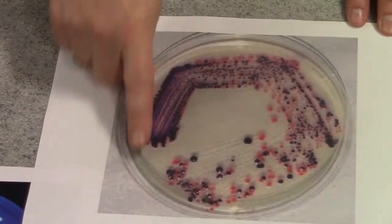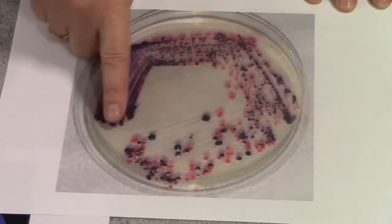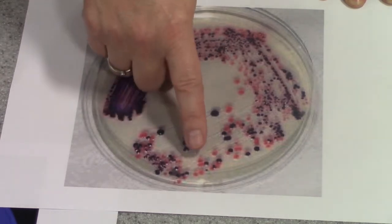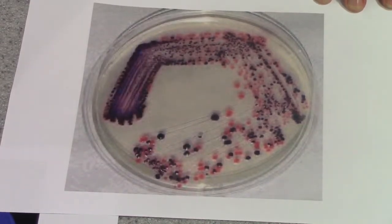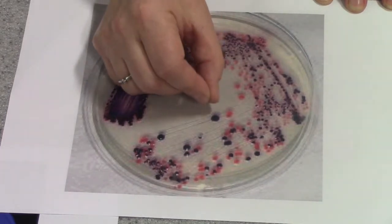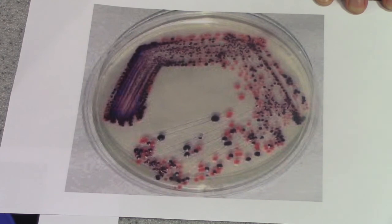Alternatively, if it's a mixed culture, you may by the end be able to see individual colonies of the different bacteria in the culture. For example, we've got the purple ones and the pink ones. It would be possible, using a sterilised wire loop, to actually pick off individual colonies to subculture them.